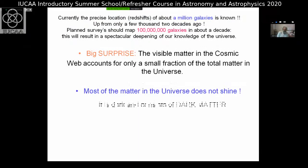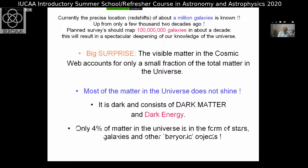Currently, the precise location in redshift of about a million galaxies is known — big progress from a few thousand two decades ago. But planned surveys should go much deeper, mapping almost a billion galaxies. Even now we have a big surprise: the visible matter on the entire cosmic web accounts for only a small fraction of the total matter in the universe, because most of the matter does not shine — it is dark, consisting of dark matter and dark energy.